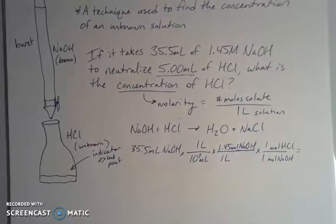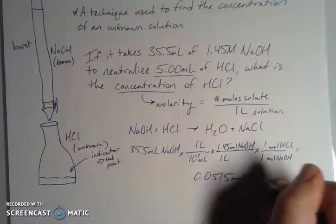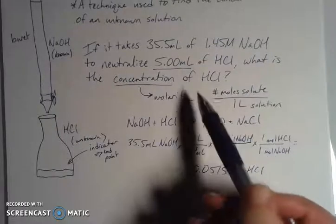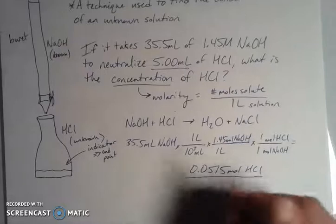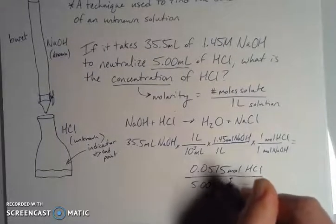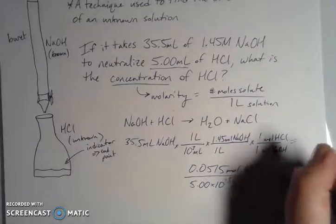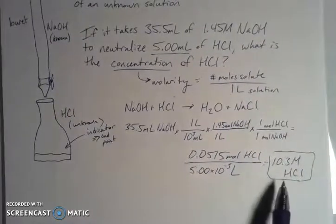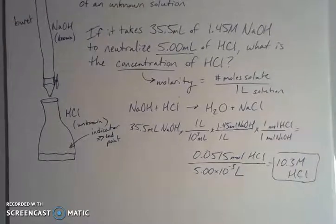Now I've converted to units of moles of HCl. Running the numbers, I get 0.0515 moles of HCl, or 5.15 × 10⁻² moles of HCl. I take this and divide it by 5.00 milliliters — converting to liters in my head — and end up with a fairly concentrated solution of 10.3 molar HCl. That means for every one liter of solution I have 10.3 moles of hydrochloric acid, which is quite concentrated.